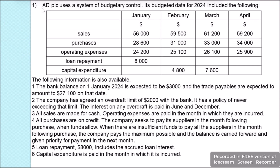The question states that ADPLC uses a system of budgetary control. Its budgeted data for 2024 includes the following. For January, February, March and April, we have sales of $56,000, $59,500, $61,200 and $59,200. Purchases are $28,600, $31,000, $33,000 and $34,000.